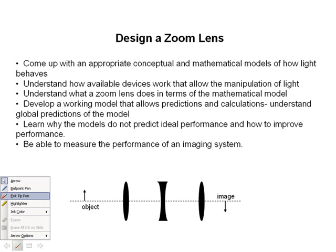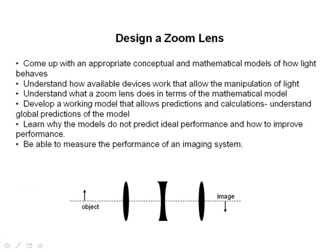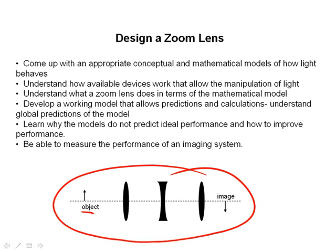Hi, as we continue with our series of mini-lectures, we are studying aberrations. In other words, how an imaging system such as this zoom lens here does not perfectly image objects onto the image plane over here.